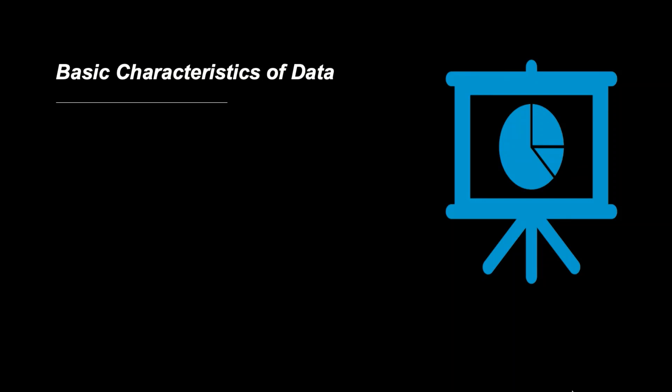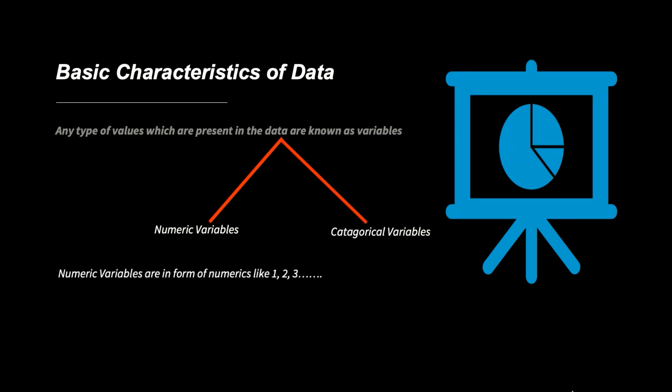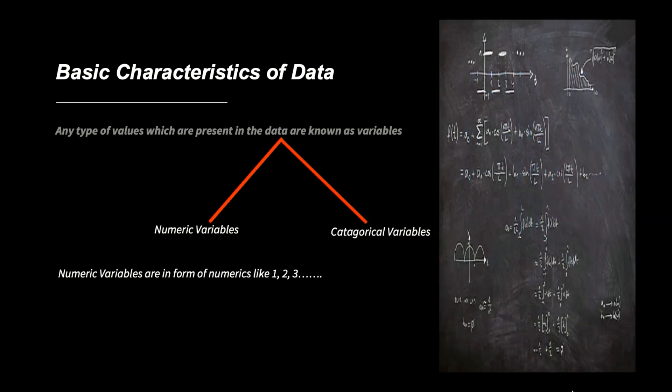Commonly, the values present in the data are known as variables. Broadly, there could be two different types of variables in our data: numeric variables and categorical variables. Let's first talk about numeric variables. The numeric variables are in form of numbers, like 1, 2, 3, etc. On numeric data, we can perform different types of arithmetic functions. For example, we can sum the numeric variables, take an average, multiply them, divide them, and so on.